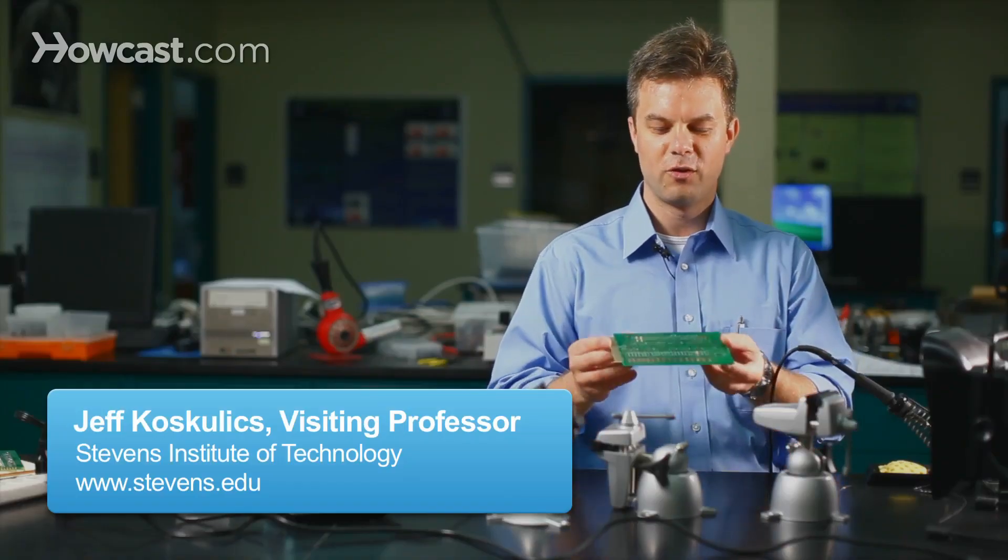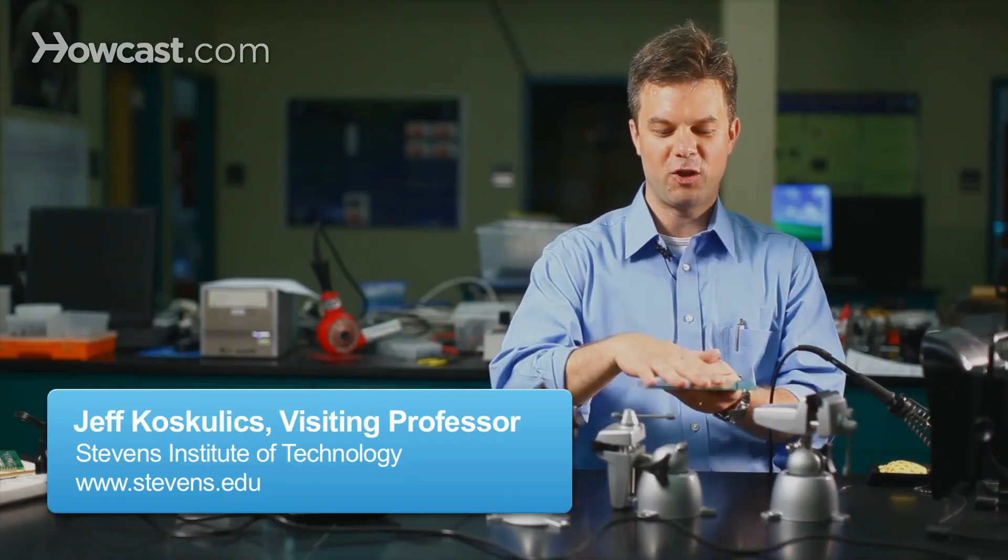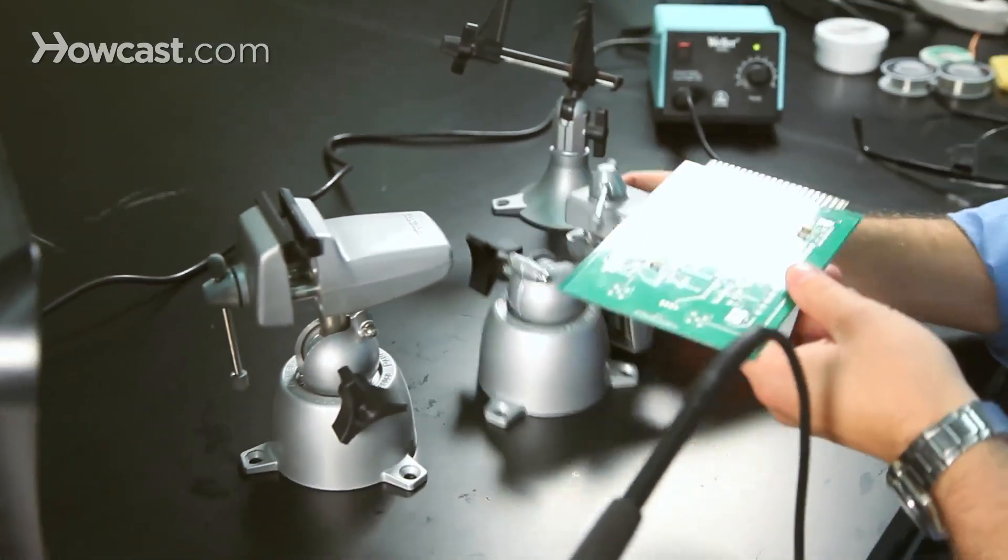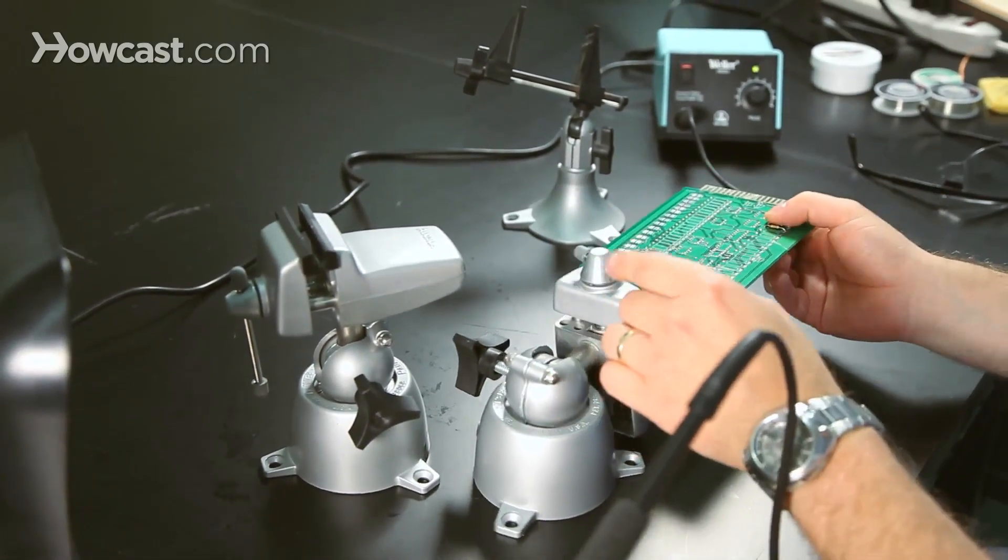It's important to be able to have your workpiece held by some kind of vise when you're working with it. It's really very helpful in order to have both hands free to do everything that you need to do when you're soldering, and so what we use are these different types of vises to hold our workpiece.